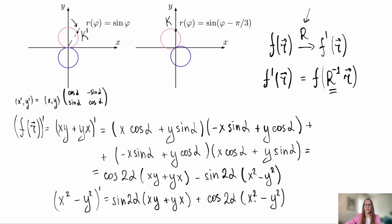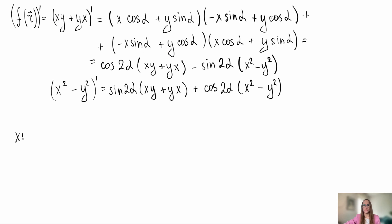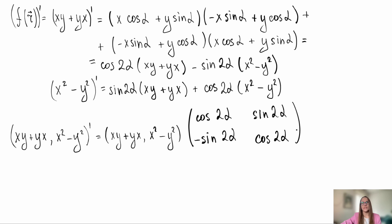Later it will become clear why. For now, let's write this transformation of the two functions in the form of a matrix. Notice that what we obtained looks suspiciously similar to a rotation matrix, except that instead of the angle alpha, we have the angle 2 alpha.